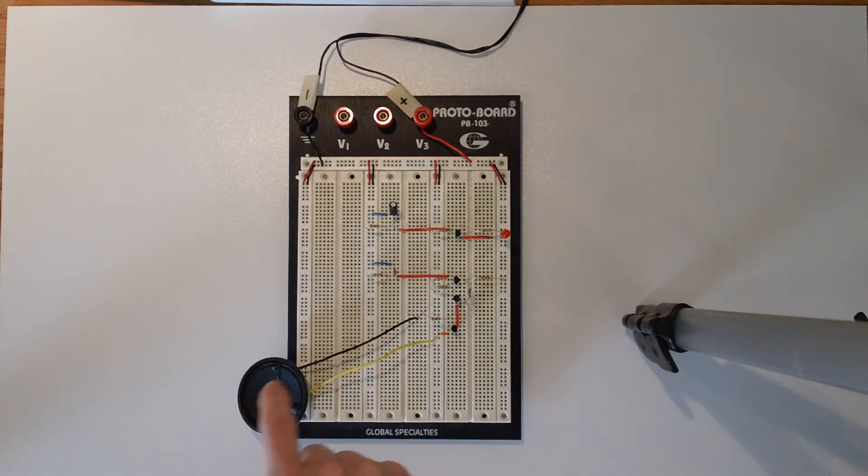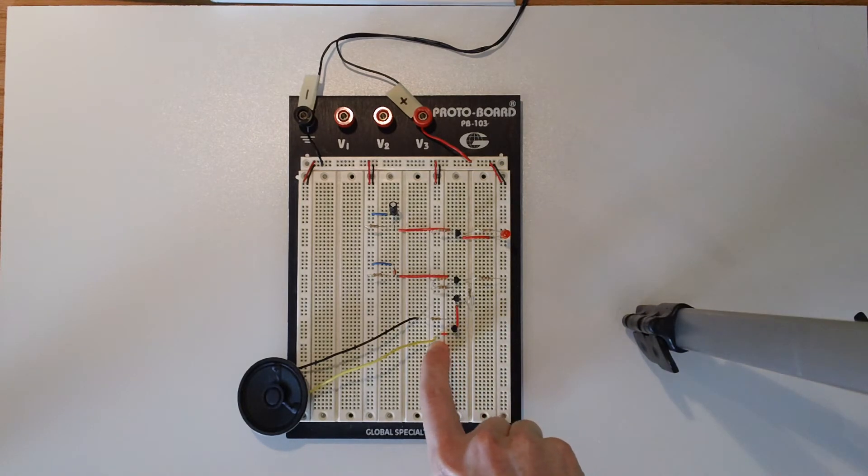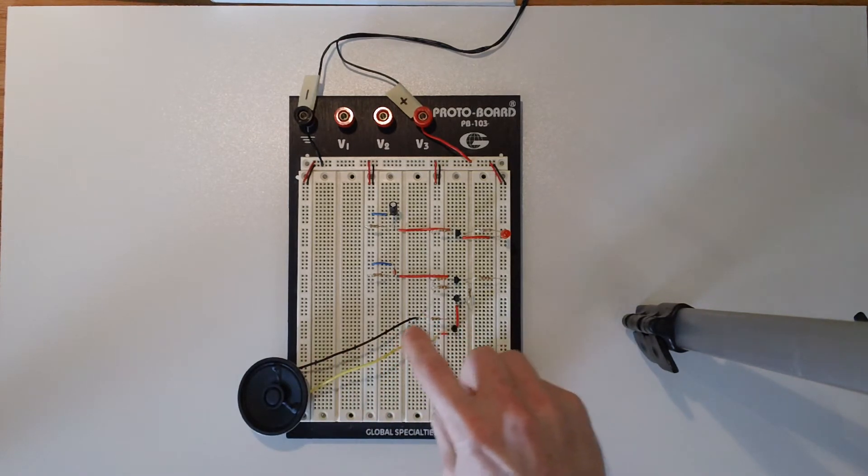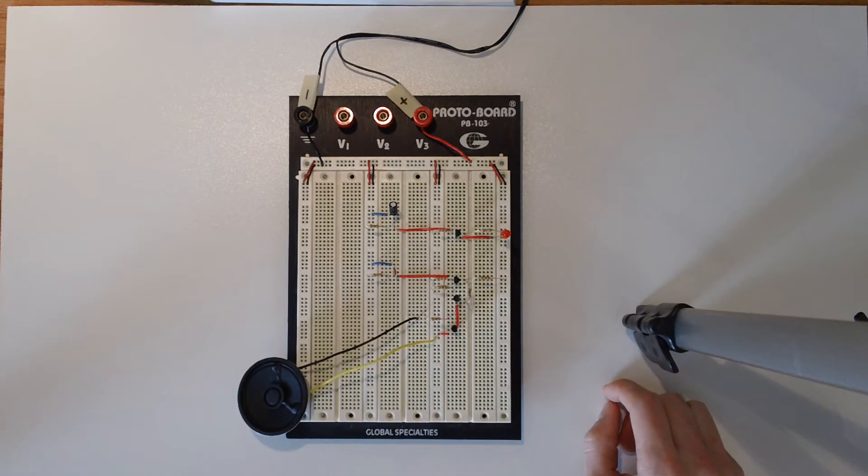And then routing our speaker, creating basically a circuit between, this yellow line is running to power, goes through the speaker, goes through the resistor, and essentially creates a circuit through the last transistor in the circuit.